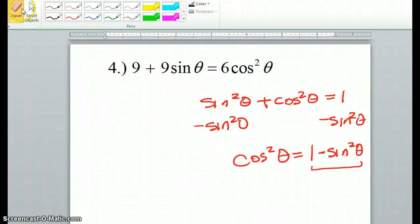Alright, so here's the problem that we left off at. I was talking to you about the identity property that you should be using for this problem, and also that we're going to be replacing cosine squared theta with 1 minus sine squared theta.